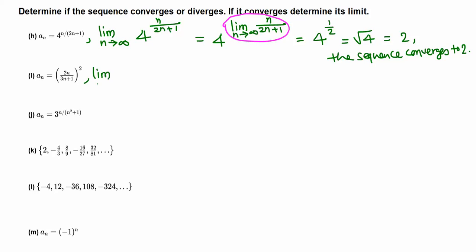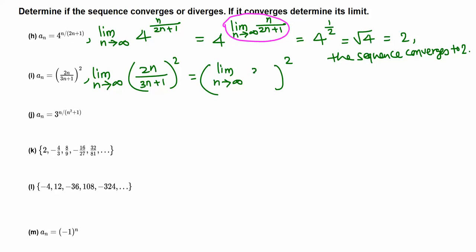Next, let's find the limit of 2n quantity squared over 3n plus 1, all squared. This is something squared, and the square function is always continuous, which means we can take this limit inside. So this becomes the square of the limit of 2n over 3n plus 1. For this infinite limit, only the leading terms matter, so 2n over 3n, and the n's cancel, giving 2 thirds.